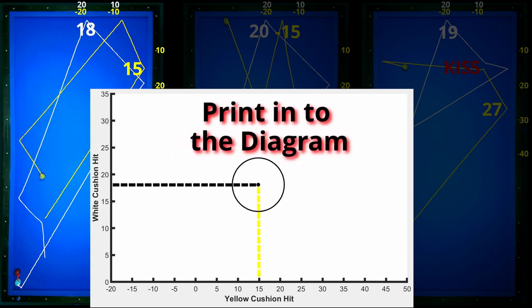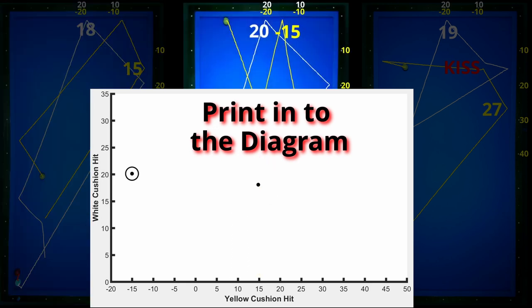When we enter the different routes into the diagram we get these points.